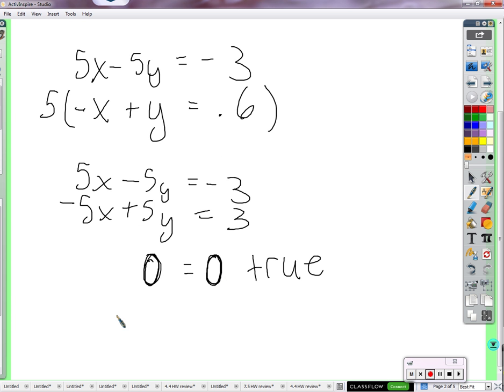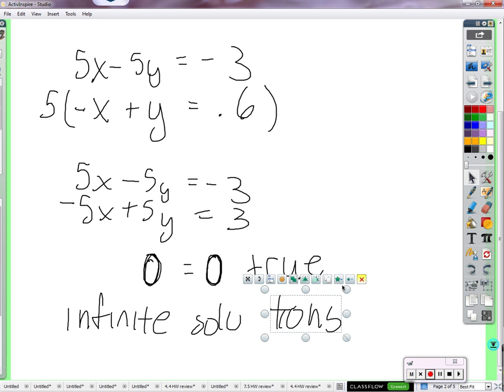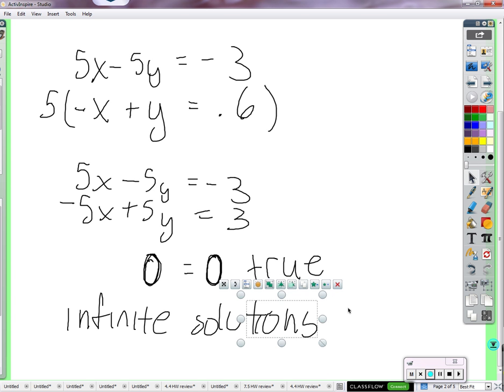Since it's true, we can say that there are infinitely many solutions. Or you can just say infinite solutions. It's a little shorter to say it that way. What that means is that because these two equations turn out to be exactly the same as each other, all the solutions for one are the same as the solutions for the other.